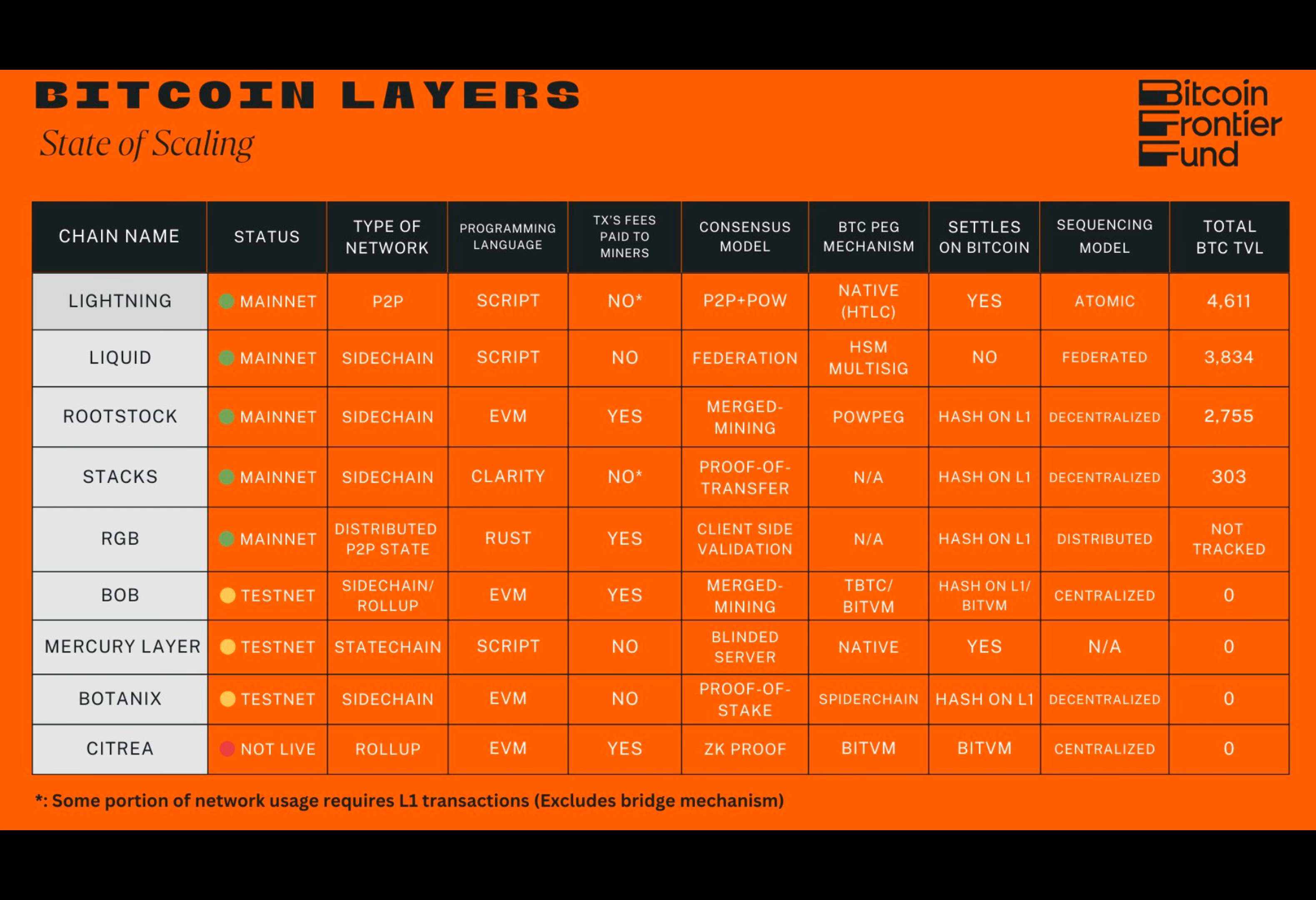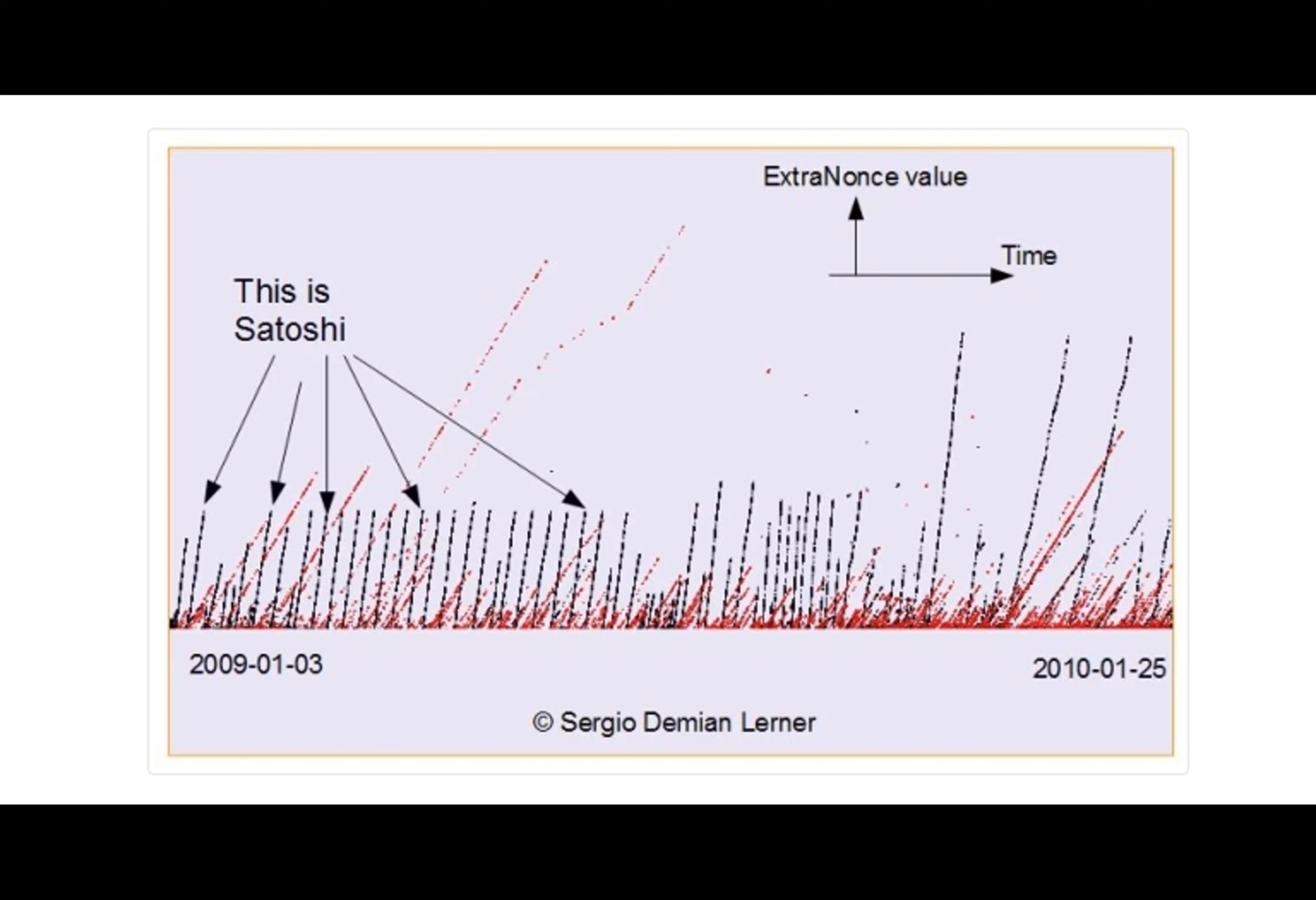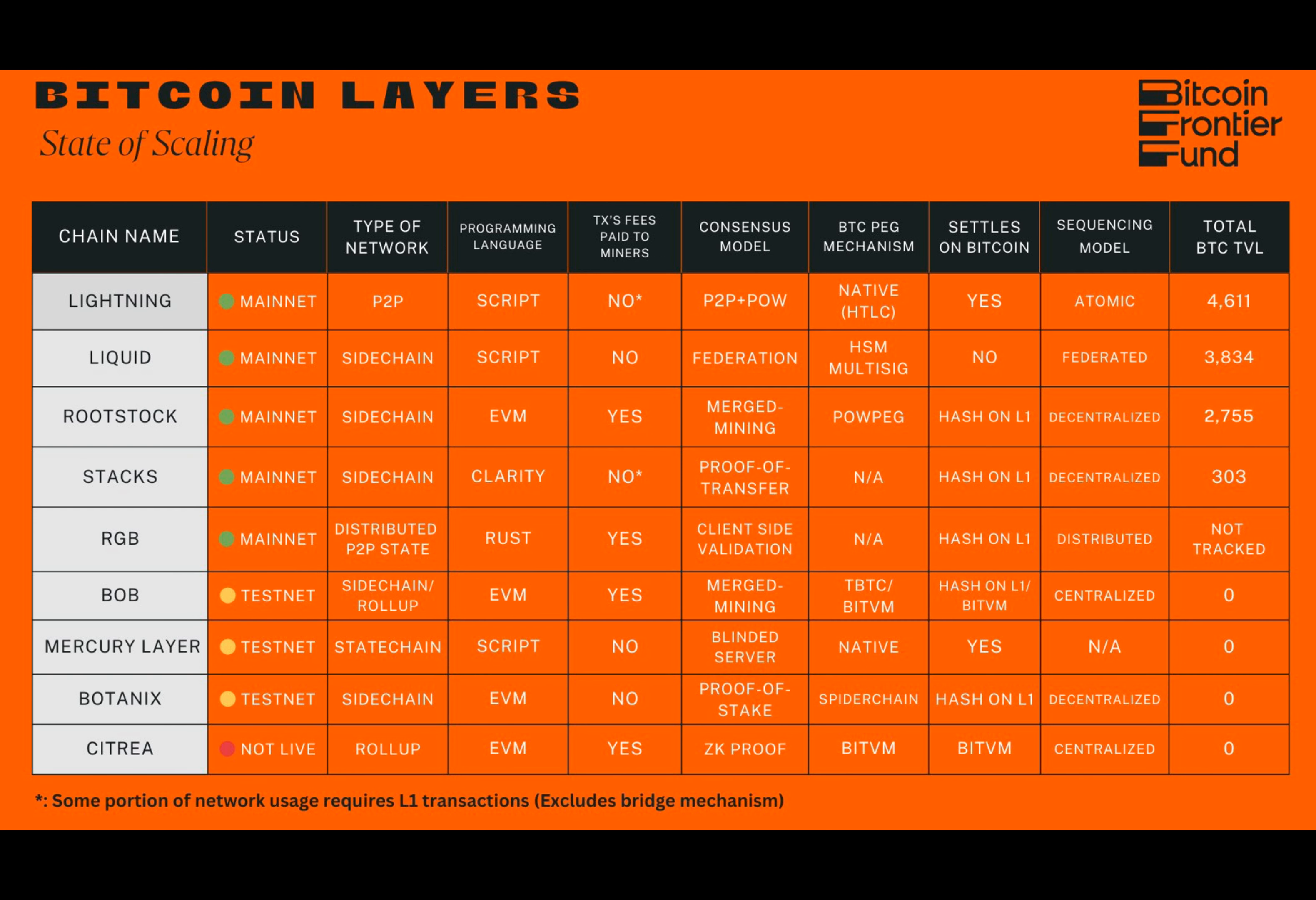The computer scientist also said that Rootstock Labs believes in simple criteria to define what constitutes a Bitcoin L2. Lerner added that duplicitous projects claiming to be built on Bitcoin have marred every bull market.